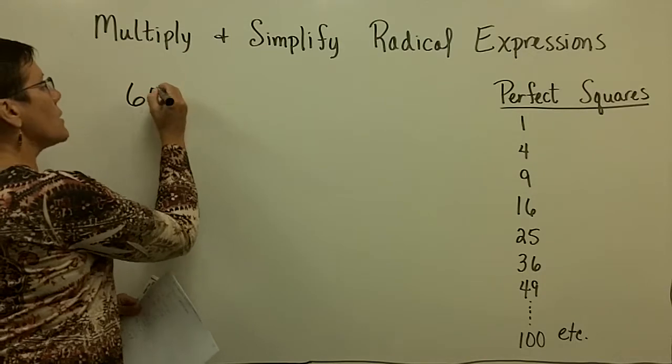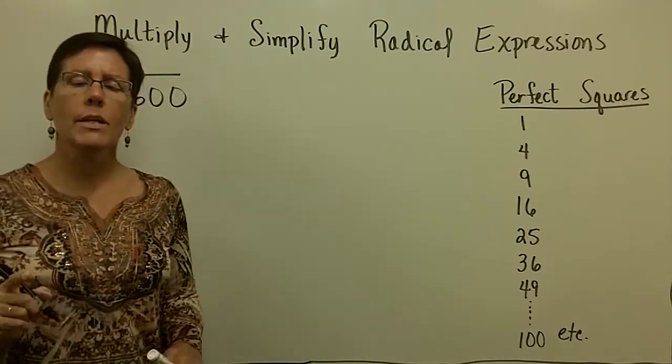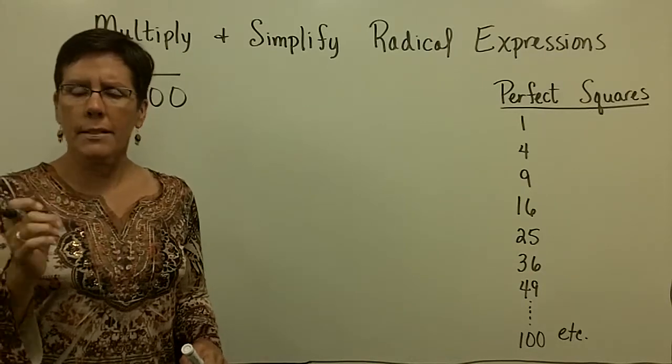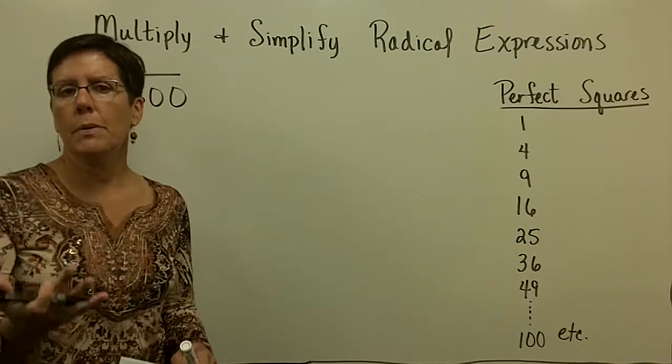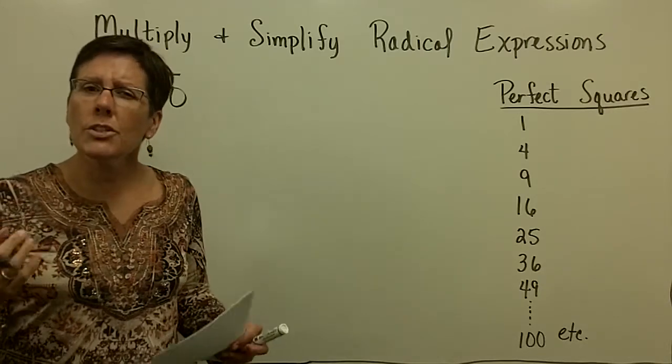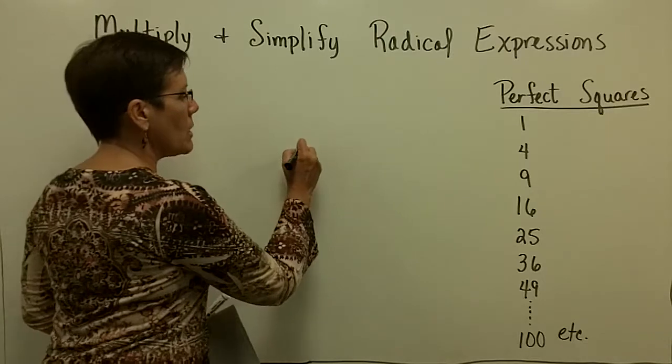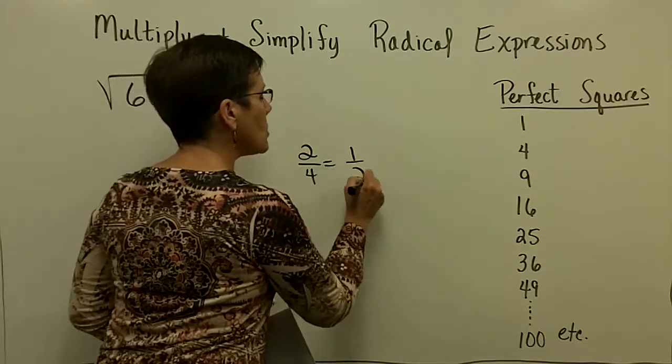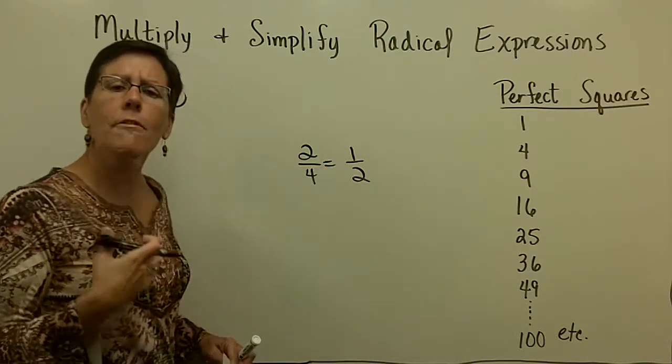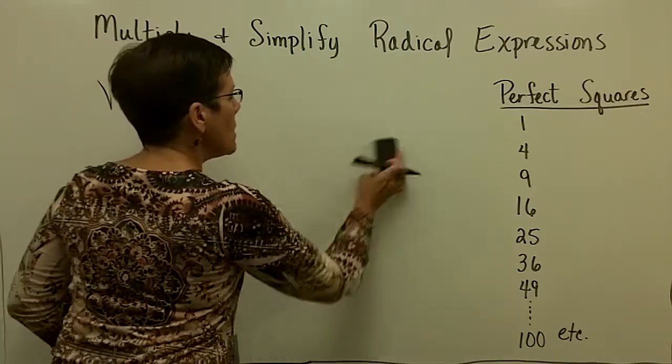So the number 600. I want to simplify the square root of 600. I don't think I've mentioned this yet, but I'm not taking my calculator and typing in the square root of 600 and getting a decimal value. I'm reducing this radical. I'm simplifying this radical expression. Much like we take the fraction two-fourths and we reduce it or simplify it and call it one-half, that's the concept of what I'm trying to get you a handle on here.